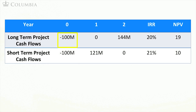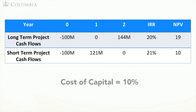In this example, you are also considering two mutually exclusive projects. The long-term project requires an investment of $100 million today and pays $144 million in year two. The short-term project requires an investment of $100 million today and pays $121 million in year one. The short-term project is available today but is not going to be available in year one. The cost of capital is 10%.